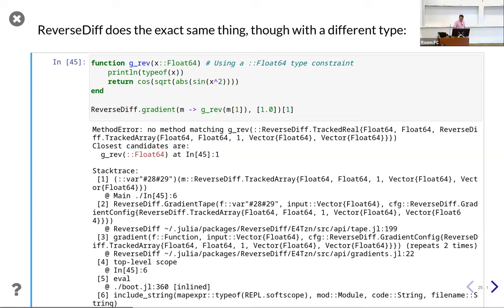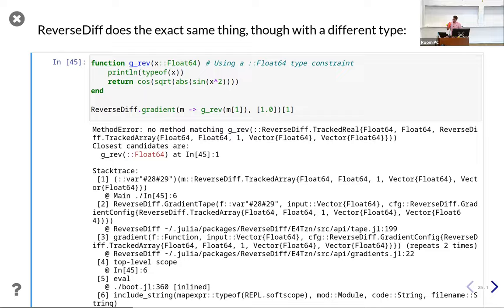ReverseDiff does the same thing as ForwardDiff but it uses a tracked-real struct rather than ForwardDiff's dual. It has the exact same problem with type constraints. So if you're using ReverseDiff, make sure that you have broad types. Any questions about the typing stuff? Question: I've struggled with passing a pre-allocated array as an intermediate buffer inside a function — that creates problems.